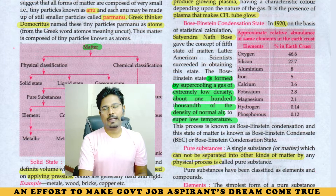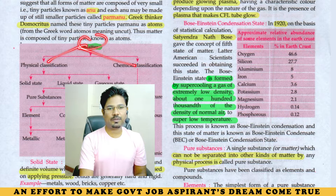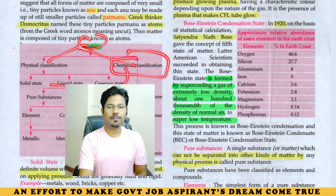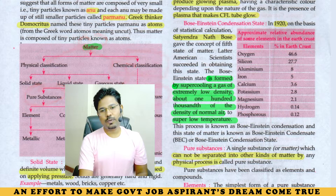Matter also has physical and chemical classification. Under chemical classification, we have pure substance and mixture. This time, we will talk about pure substance and mixture.